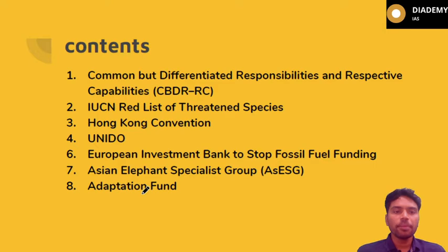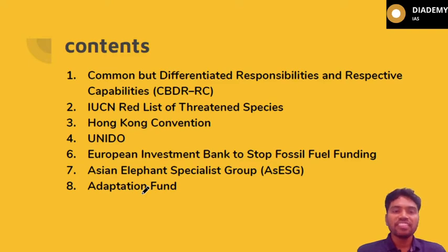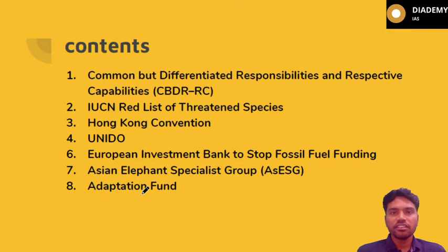The topics for today include: Common but Differential Responsibilities in the context of climate change; the IUCN Red List of threatened species; the Hong Kong Convention; the United Nations Industrial Development Organization and its recent news and contributions; the European Investment Bank stopping fossil fuel funding; the Asian Elephant Specialist Group, which is part of IUCN; and finally the Adaptation Fund.